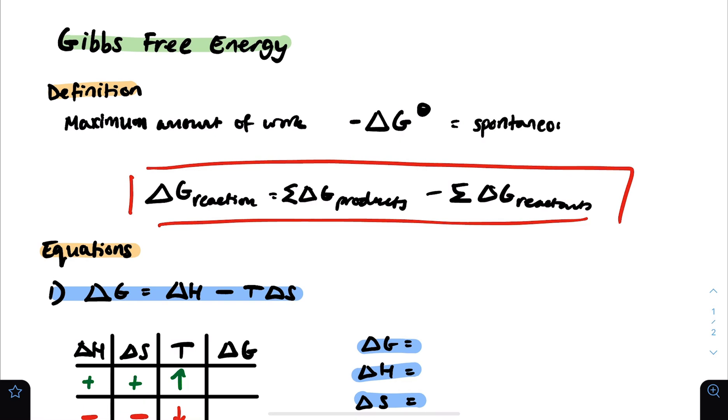A non-spontaneous reaction, which is when Gibbs free energy is positive, is when the reaction needs a little bit more external energy or input required in order for it to take place in the given conditions.